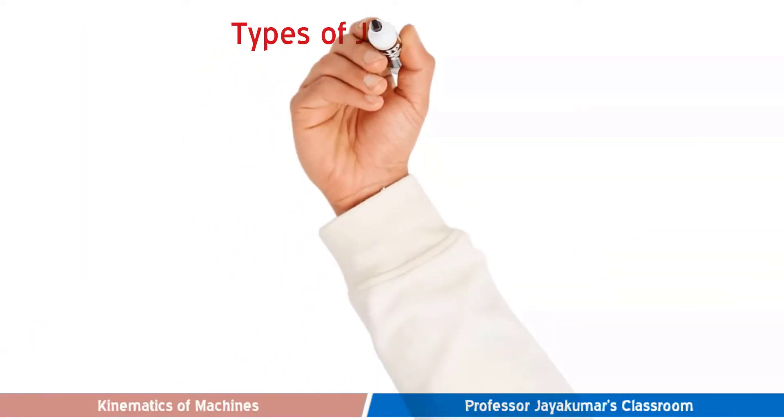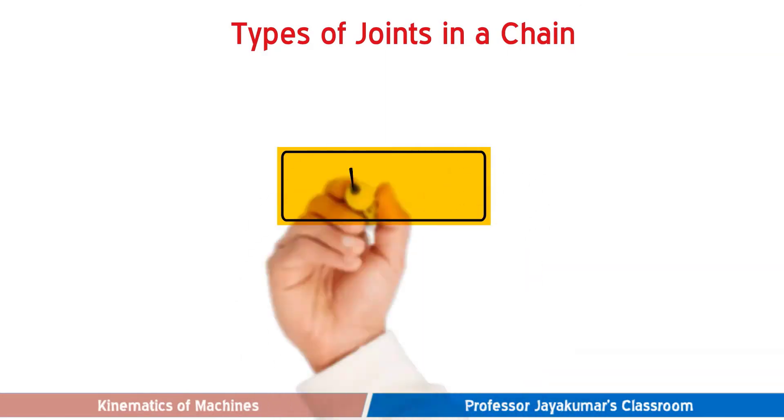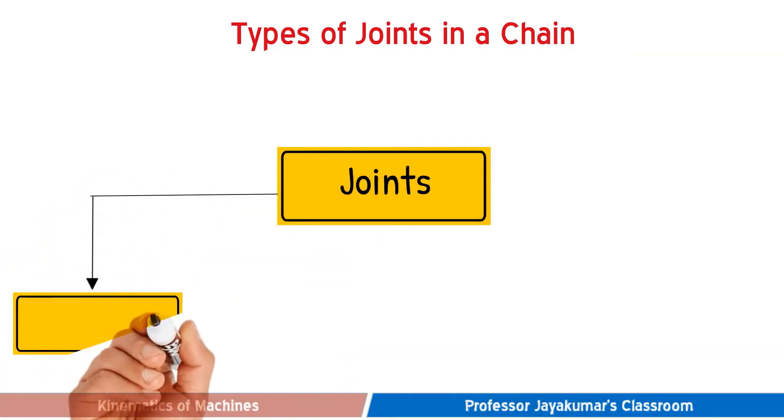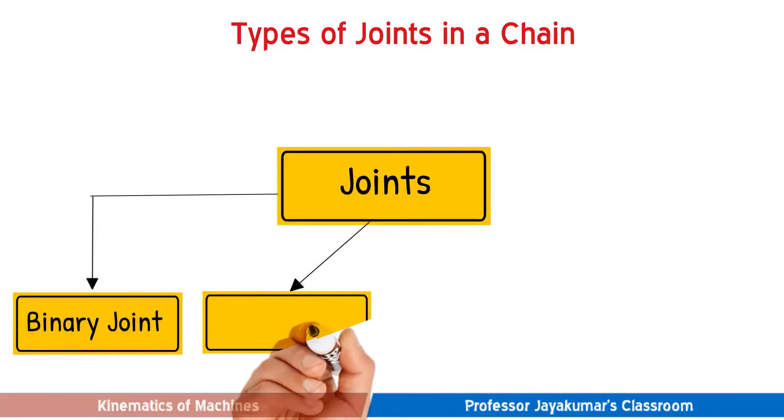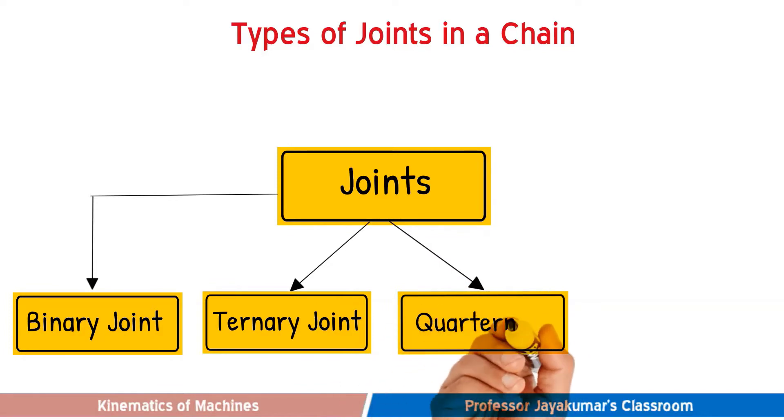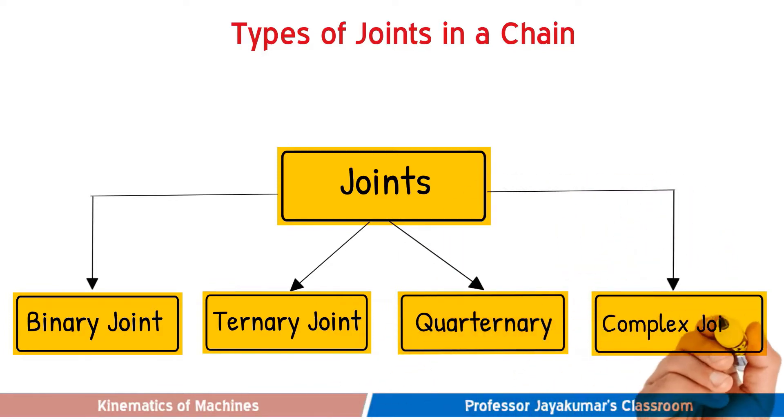Now we will discuss types of joints in a chain. In general, there are four types of joints: binary joint, ternary joint, quaternary joint, and complex joint. We will present them one by one now.